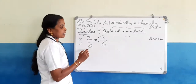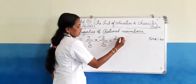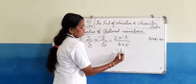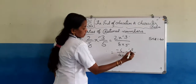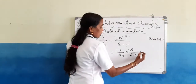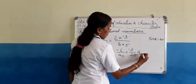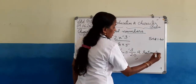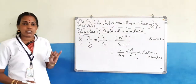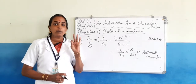Next is multiplication of rational numbers. Here 2 by 8 is a rational number and negative 3 by 5 is also a rational number. Their product is 2 into negative 3 by 8 into 5, which equals negative 6 by 40, simplified to negative 3 by 20, which is also a rational number. That means the product of any two rational numbers is also a rational number — rational numbers are closed under addition, subtraction, and multiplication.